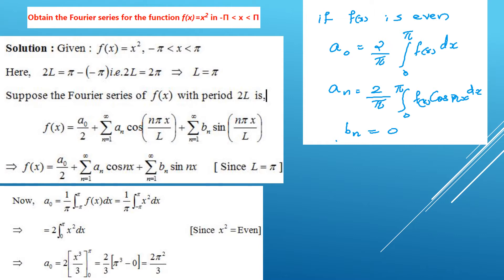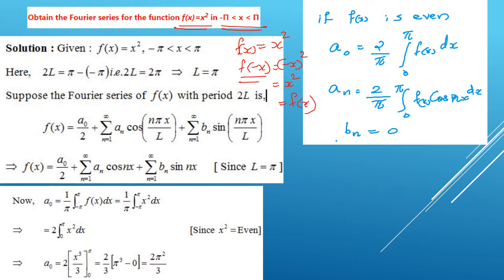The first problem: consider the function f(x) = x² in the limit minus pi to plus pi. Is x² an odd or even function? Let us check. f(x) = x², so f(-x) = (-x)² = x² = f(x). Since f(-x) = f(x), this is an even function.